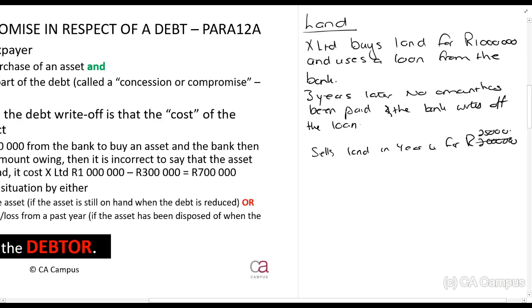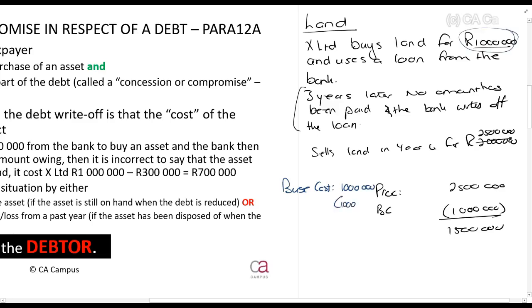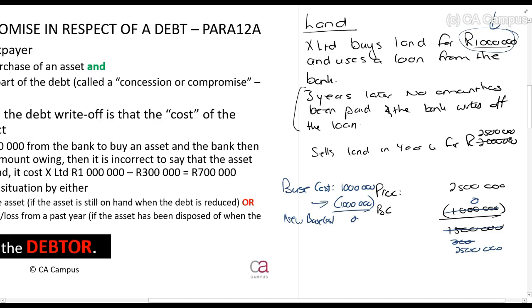So they write off the loan and X Limited sells the land in year four for two and a half million rand. The proceeds will be two and a half million and the base cost will be one million rand, so there will be a capital gain of one and a half million. But SARS says this isn't fair, because yes, the cost was one million rand, but they didn't have to pay it back because the amount was written off by the bank. So what paragraph 12A says is: take the base cost of the asset - one million rand - and deduct the amount of the debt that was saved. That gives you a new base cost of zero. So the capital gain is the full two and a half million. Basically, whatever they've written off - it doesn't have to be the full amount - reduces the cost of the asset.